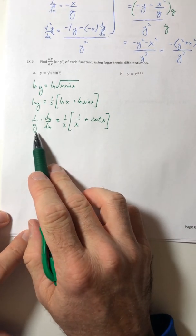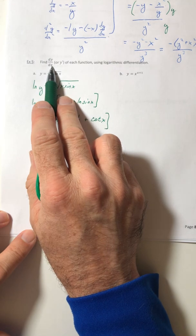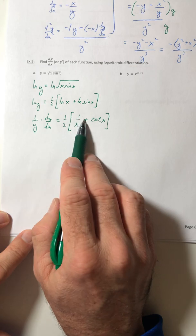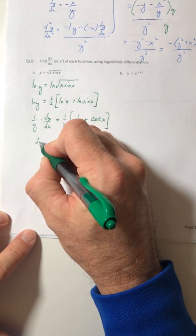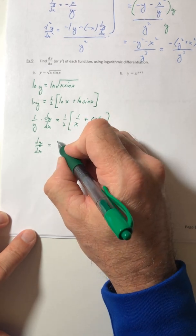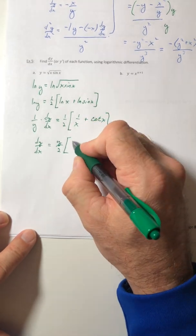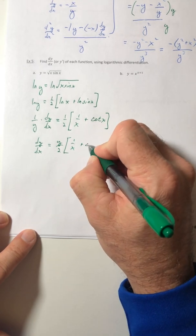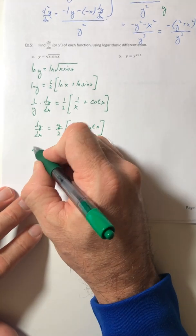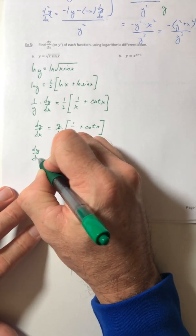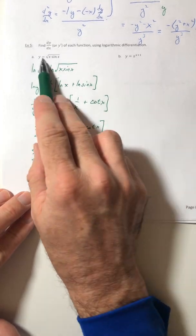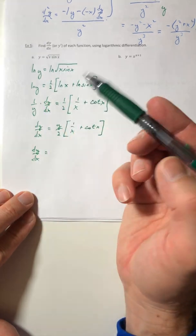And then to finish it, I'm just trying to solve for or find that dy dx. So this right here, this one over y, I'm just going to multiply by y over to the other side and get the dy dx. So we really have y over two times of one over x plus cotangent of x. And then in a lie, there's one more step.